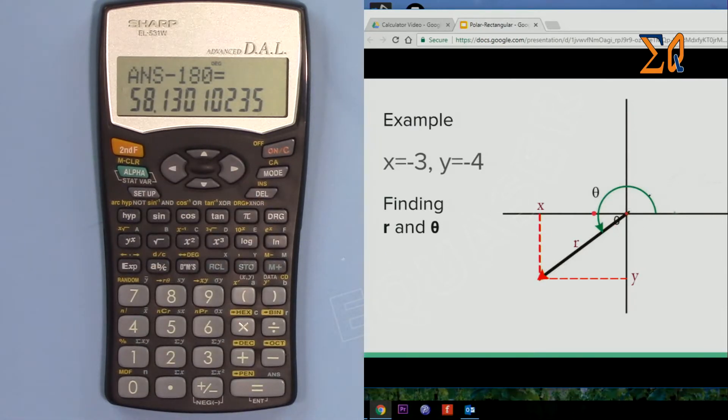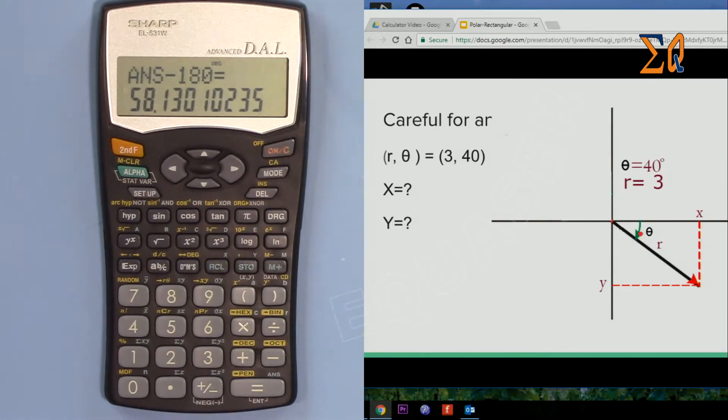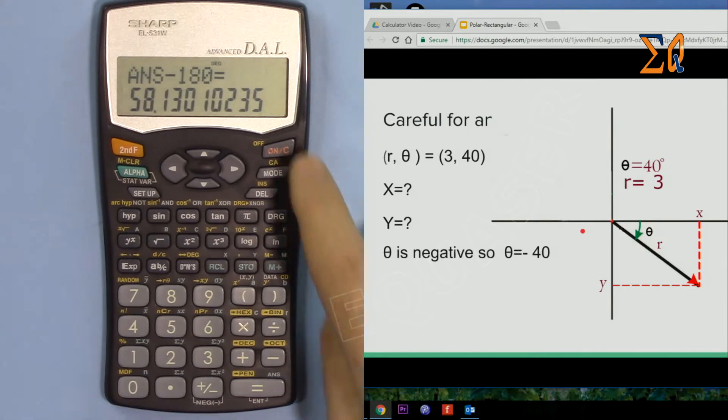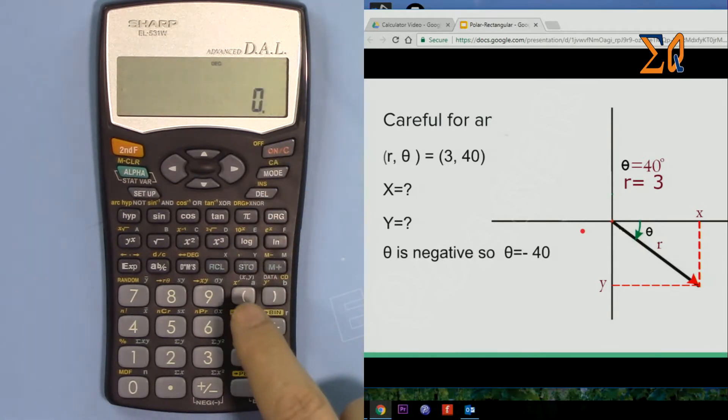So now let's do this. Theta is 40 degrees, r is 3. To do the calculation, make sure—so we have to calculate the angle from that side, so subtract 40 from 365. So 3, second function, comma, 365—I'm doing it right on the spot—minus 40. It will work.